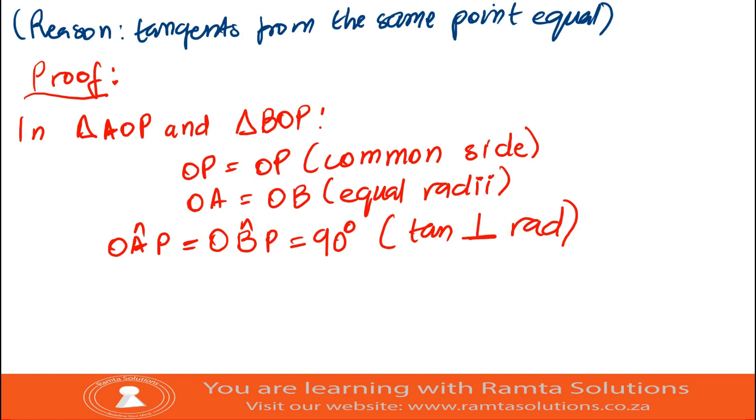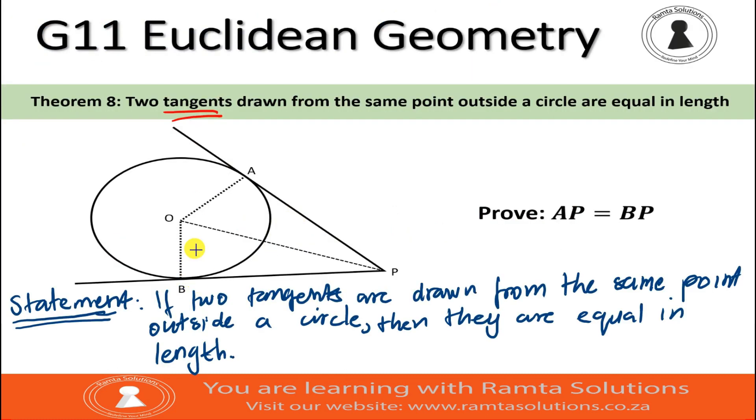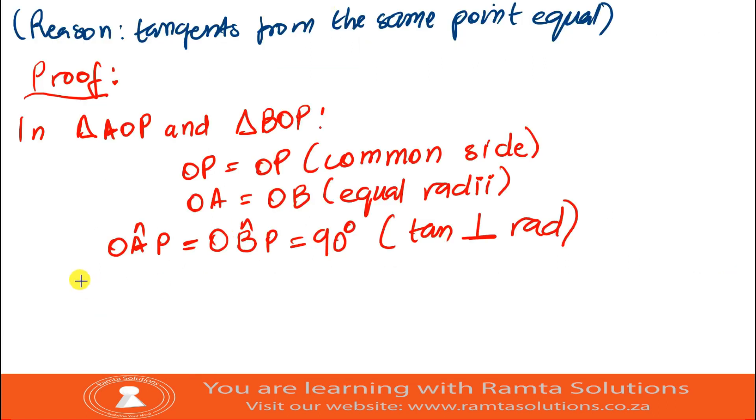Now, having said this, I want you to look at this carefully. If this is your 90 degrees, and this is some side given, and this side is opposite 90 degrees, what does it mean about this side? It is opposite the 90 degrees. So, it makes OAP what? A hypotenuse. So, we can therefore say, therefore, triangle AOP is congruent, by the way, not equal, it's congruent to triangle BOP.